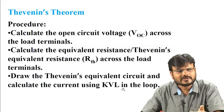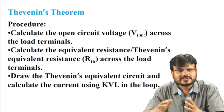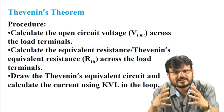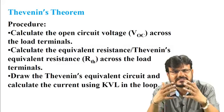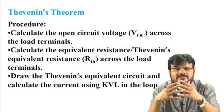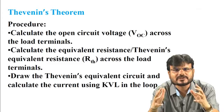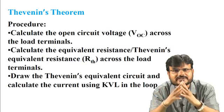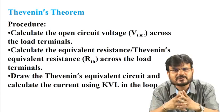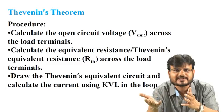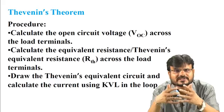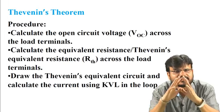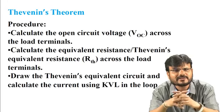Now we apply Thevenin's theorem to the same circuit. Thevenin's theorem states that any two-terminal bilateral active network can be replaced by a simple Thevenin voltage in series with a Thevenin equivalent resistance. The Thevenin voltage is the open-circuit voltage across the two terminals when all independent energy sources are replaced by their internal resistance. The internal resistance of an ideal voltage source is zero (short circuit), and the internal resistance of an ideal current source is infinite (open circuit).